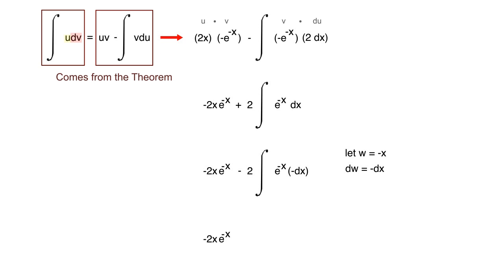So this will give us negative 2x e to the negative x minus 2 times the integral e to the w dw. You guys familiar with how to integrate e to the x - the integral of e to the x is just e to the x because the derivative of e to the x is likewise e to the x. So you can just evaluate this directly.